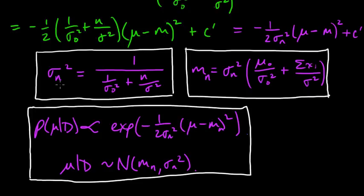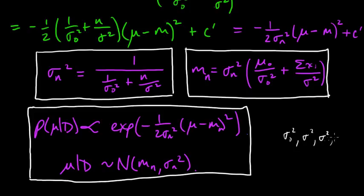Something to note about this variance — a cool little mathematical fact — is that if you were to multiply sigma_n squared by n plus 1, then it's the harmonic mean of sigma_naught squared and sigma squared taken n times. So that's a nifty little way to remember this identity: sigma_n squared is the harmonic mean of those numbers, divided by n plus 1.